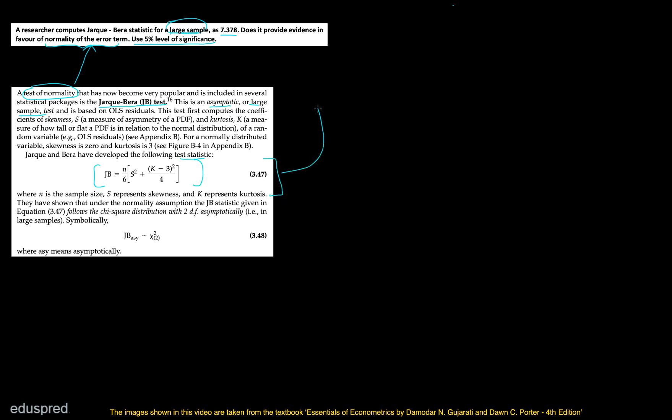The formula to find the test statistic is shown here, where n is the sample size, s represents skewness, and k represents kurtosis. In this question, you don't have to worry about this formula because they have already given you the value of the test statistic. But if a question doesn't give you the value directly, this is the formula to use. Since you're already given the calculated value, all you have to do is find the critical value and compare the two.